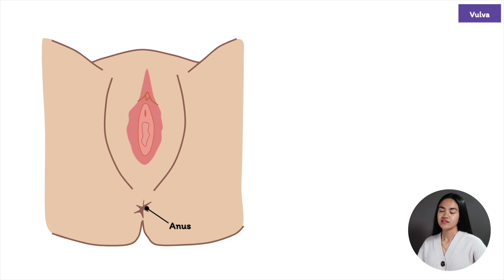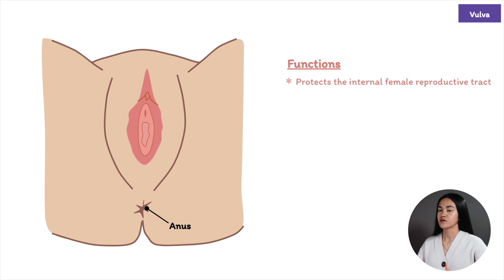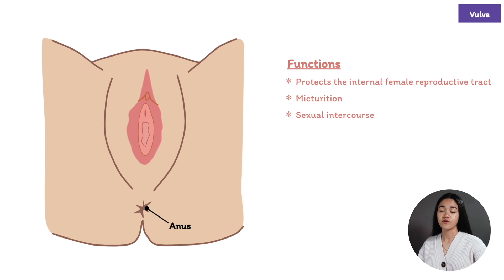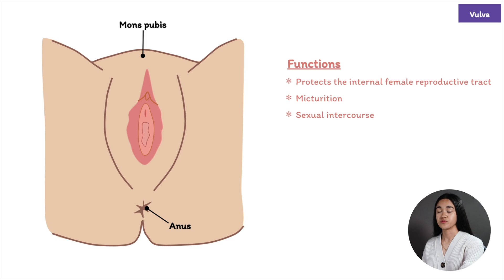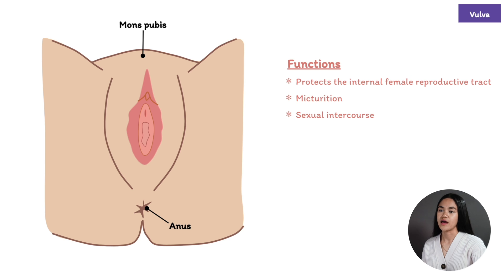The vulva has multiple functions: it protects the internal female reproductive tract; it facilitates micturition or urination because the opening of the urethra is here; and the third function is for sexual intercourse. The vulva includes several structures. The mons pubis is a fatty tissue pad in front of the pubic symphysis — it covers the pubic bone and is formed by the convergence of the labia majora.